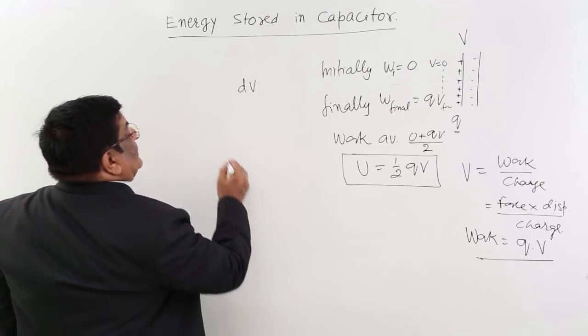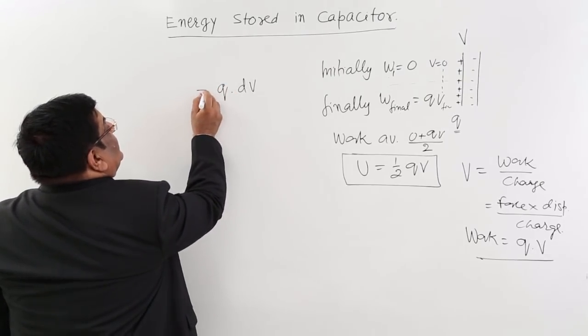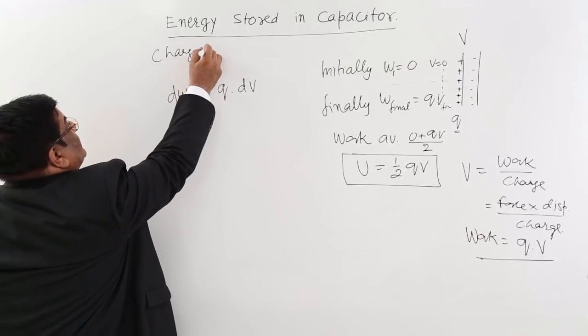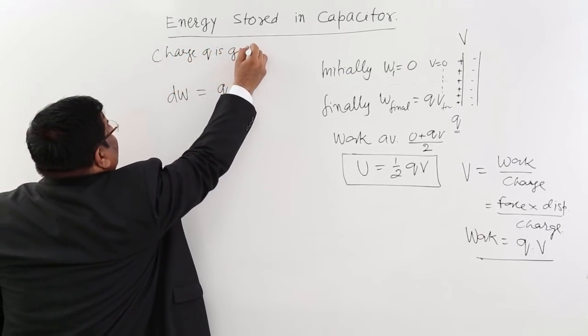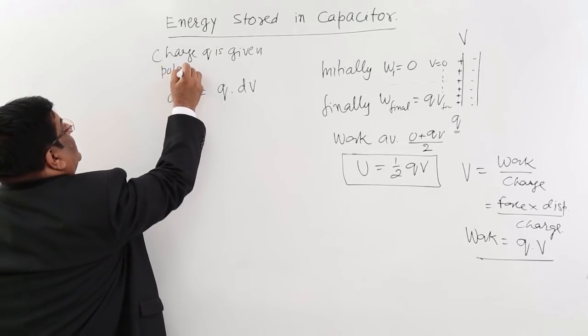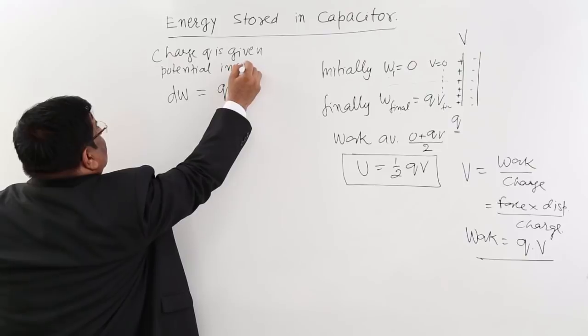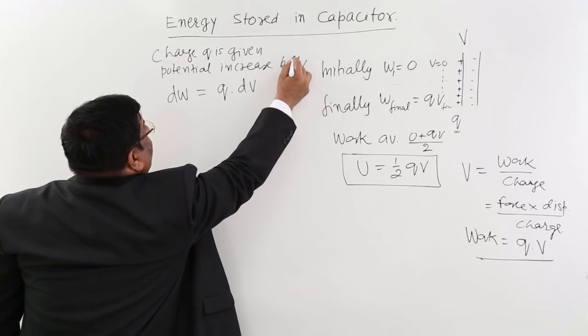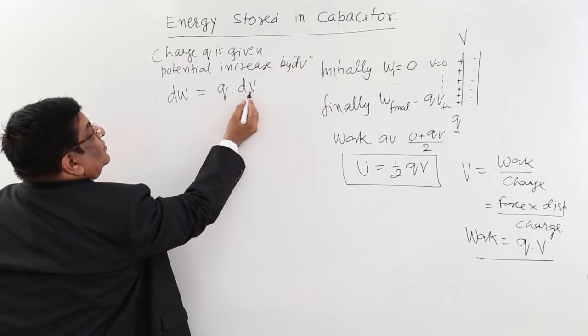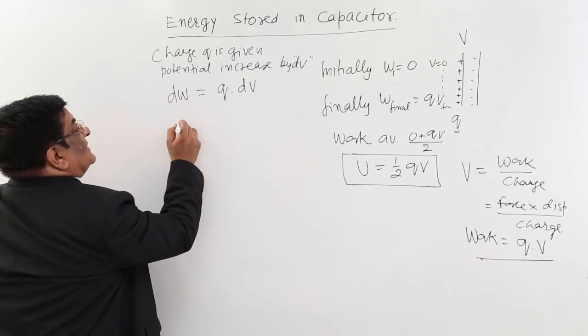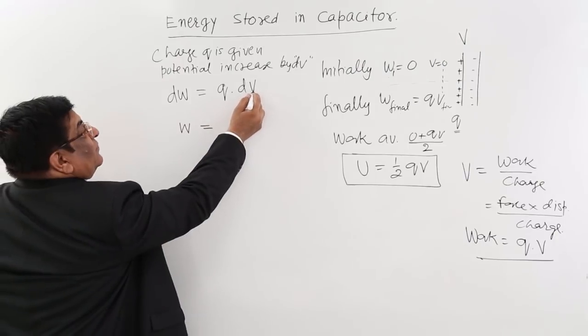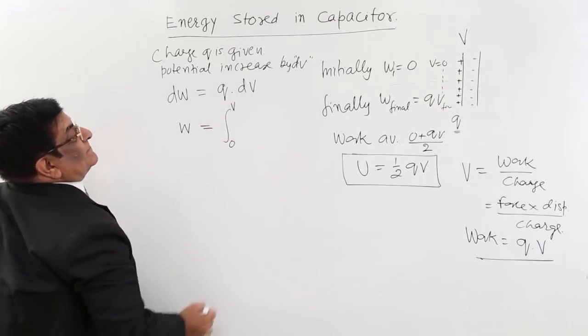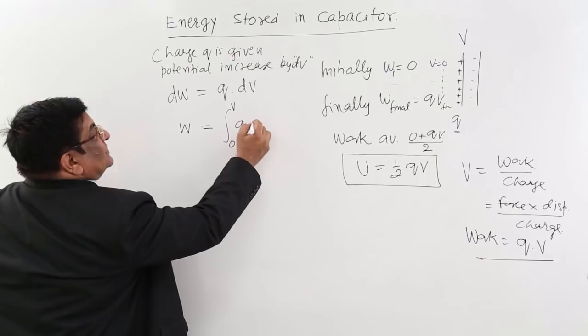Then the work done is Q into DV. Charge Q is given, potential increases by DV. Then what is the small work? DW is equal to Q into DV. And now, what is the total work done when we increase the voltage from 0 to V? Then this will be integration of Q DV.